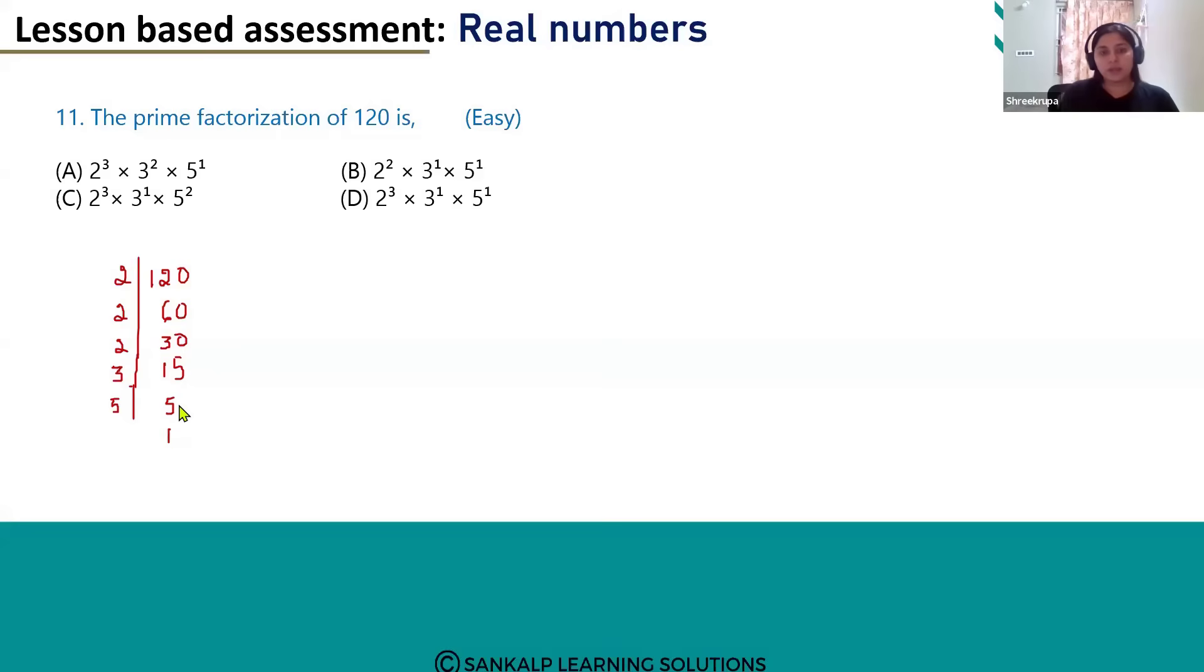So the factors of 120 are 2 into 2 into 2 into 3 into 5. So here 2 is repeated 3 times, so we can write this as 2 power 3, and only one 3 is there, so 3 power 1, 5 power 1.